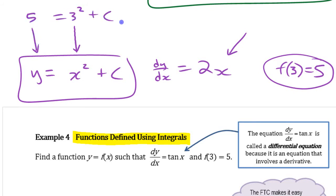Well, 3 squared, what does that constant have to be? It has to be, what does it have to be? Minus 4, right?